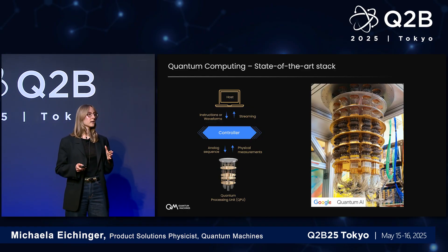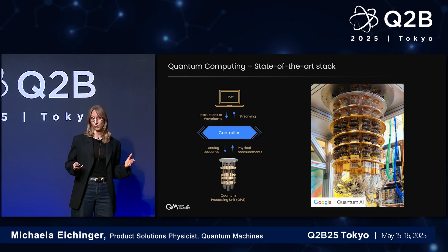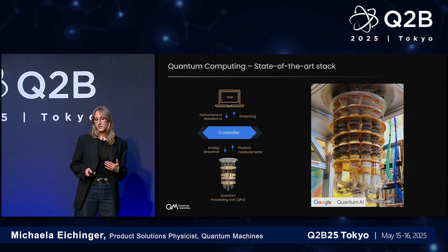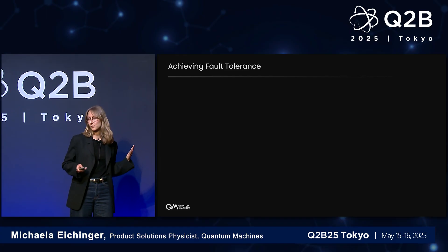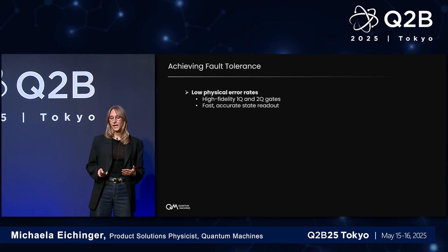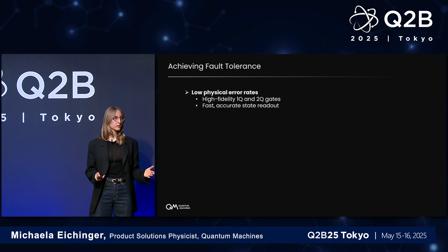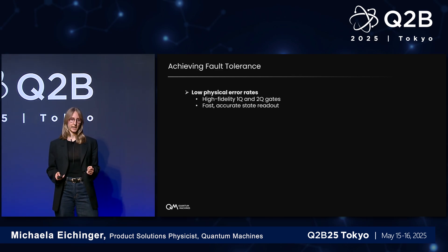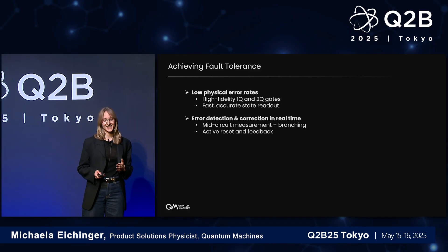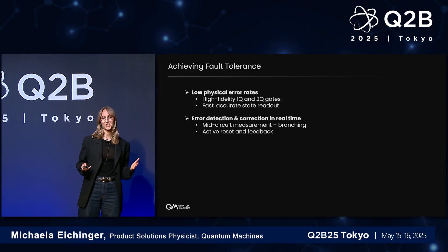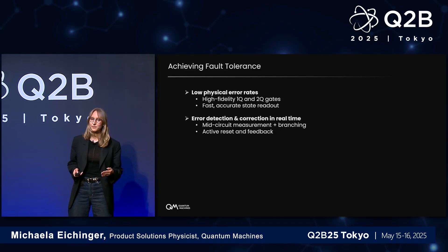However, this stack has constraints and it's not sufficient to move us to the next stage. Because there are specific requirements for fault-tolerant quantum computing. On one hand, you need to achieve very low physical error rates — so very high fidelity single and two-qubit gates — as well as very fast and accurate state readout.